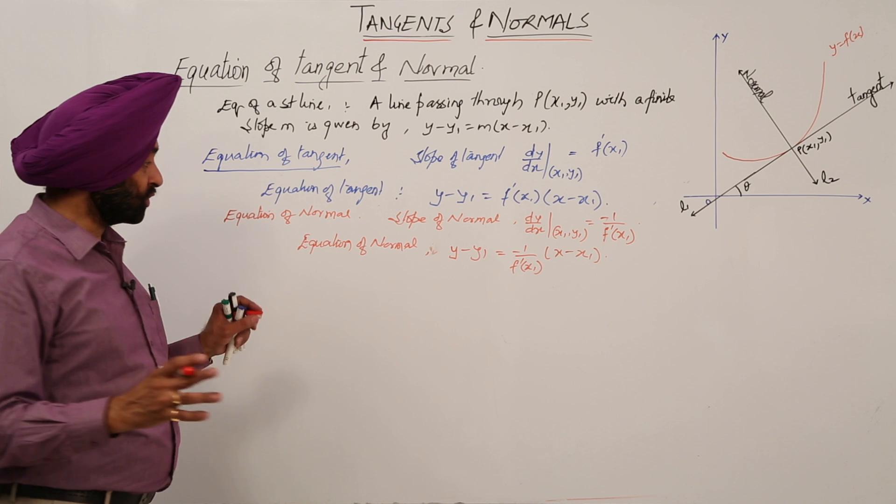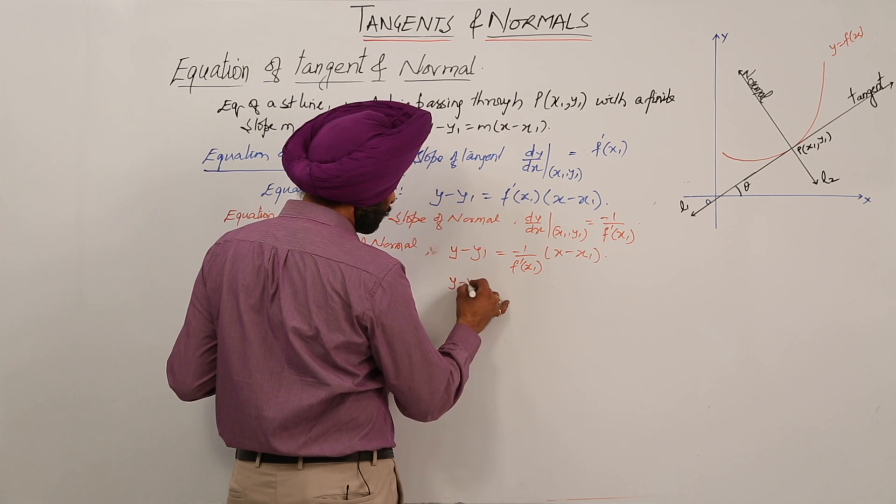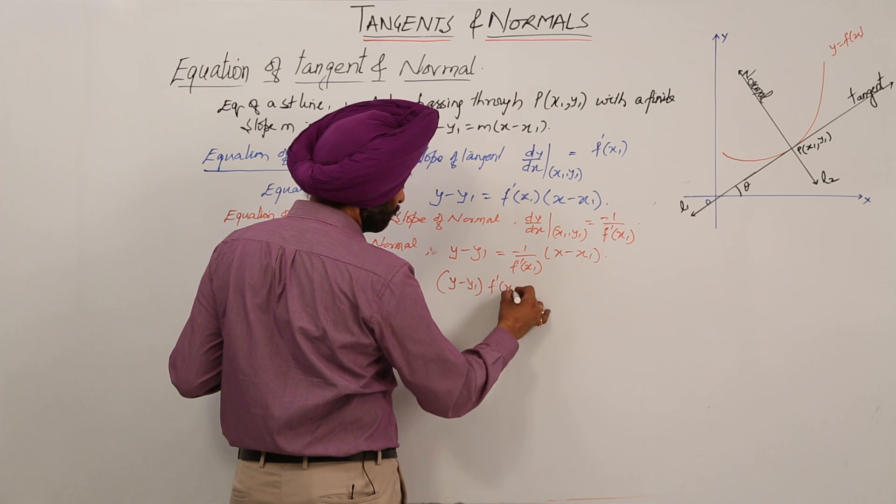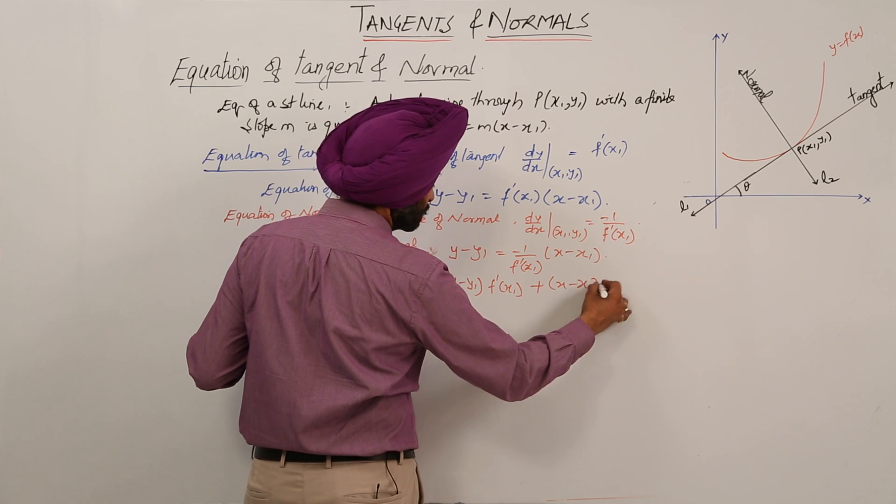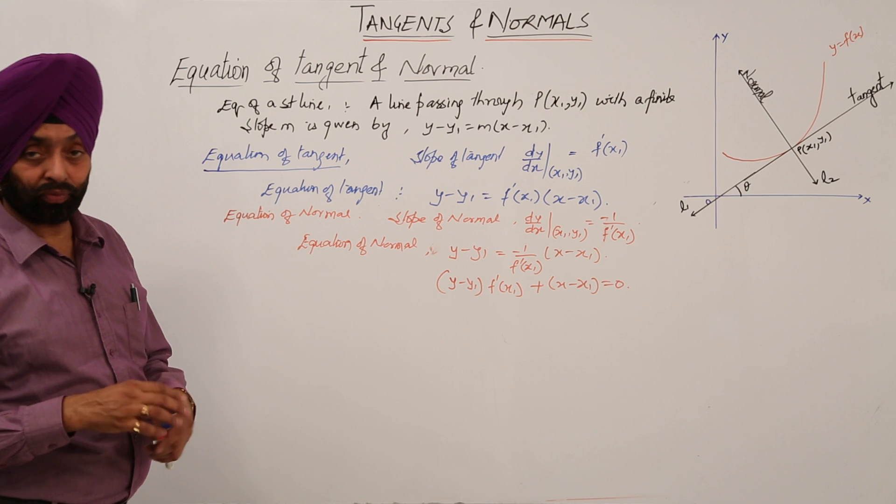Simple condition, or we can write it: Y - Y1 times F'(X1) plus X - X1 equals zero. This becomes the equation of a normal.